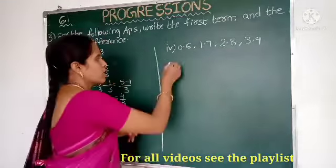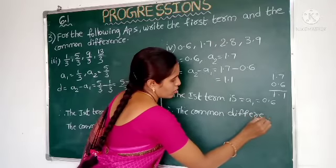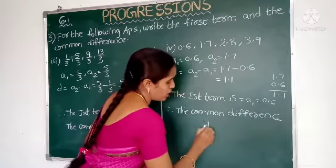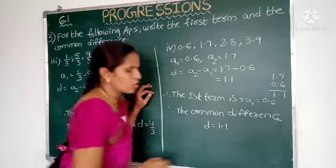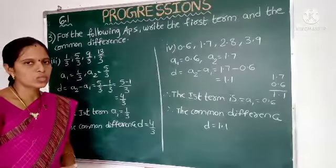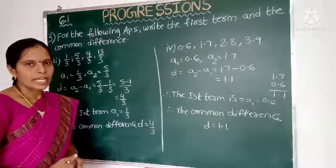The D value is 1.1. Therefore, the first term A1 equals 0.6 and the common difference D equals 1.1. Have you understood, students? These are very easy questions.